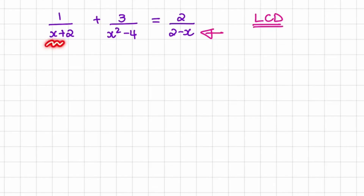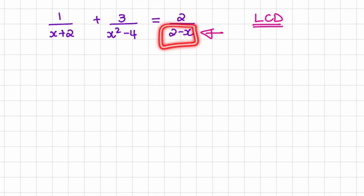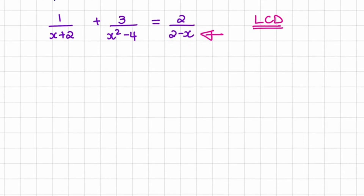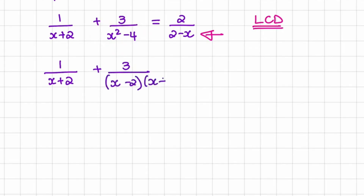Here we have x plus 2, and remember this is a difference of two squares, and here we have the same values, but x is a negative value. So in our first term, there is nothing we can do to the denominator, so we'll have x plus 2. But in the second term, I can identify this difference of two squares, and from grade 9, you would know that you can factorize a difference of two squares.